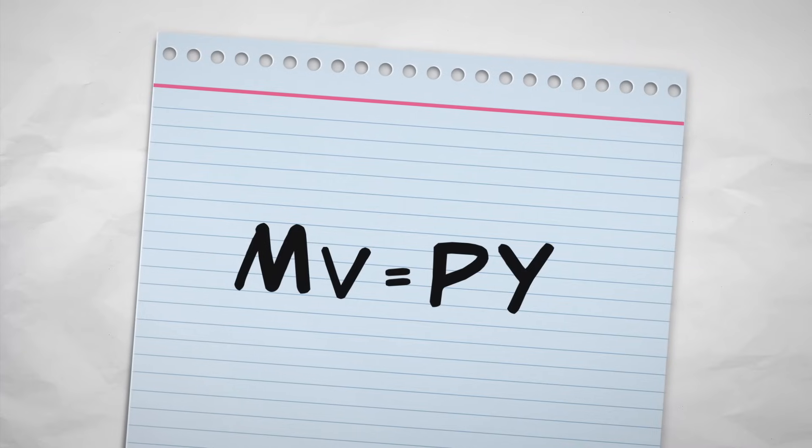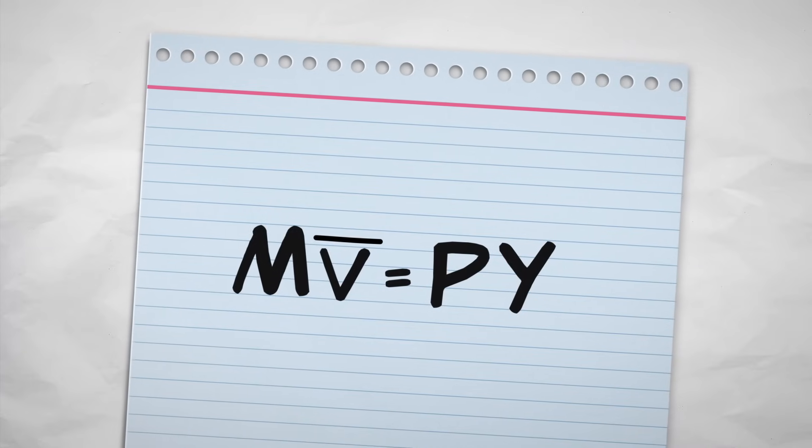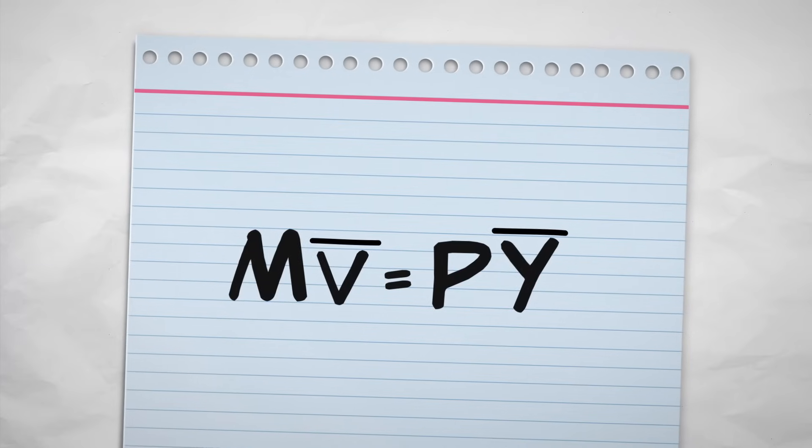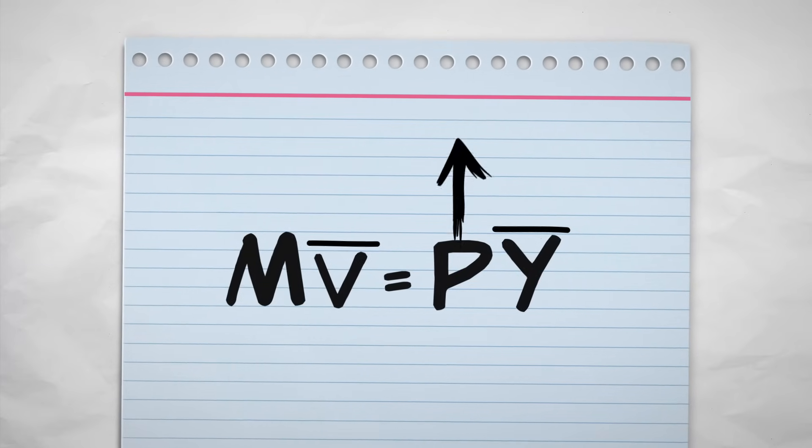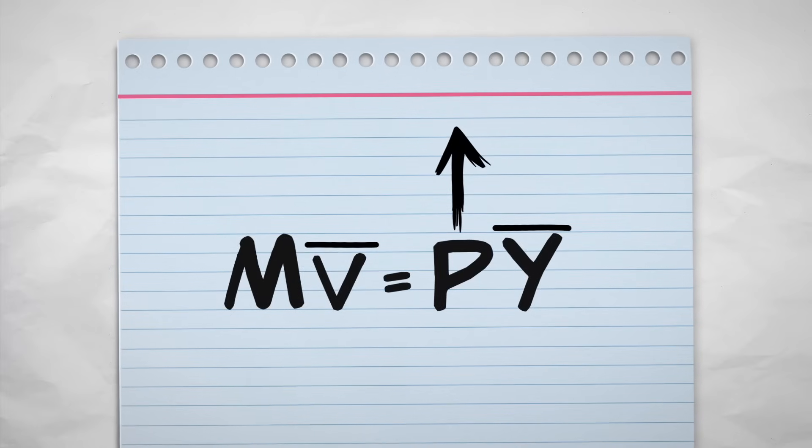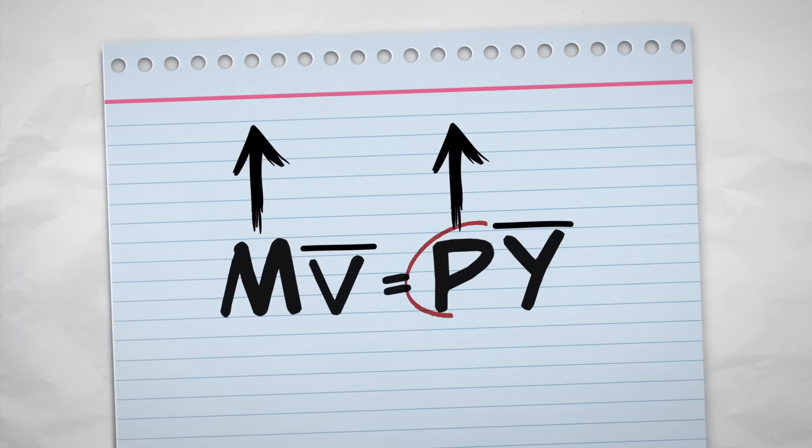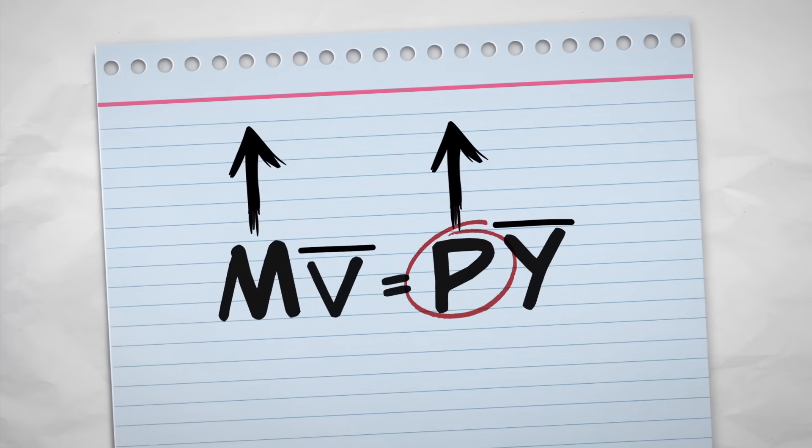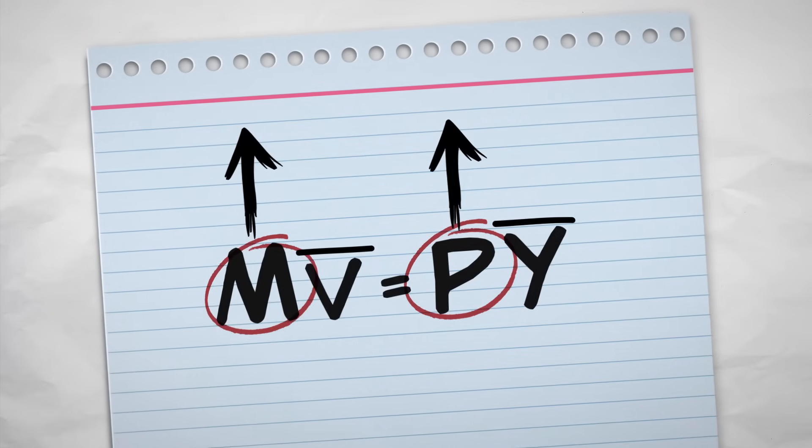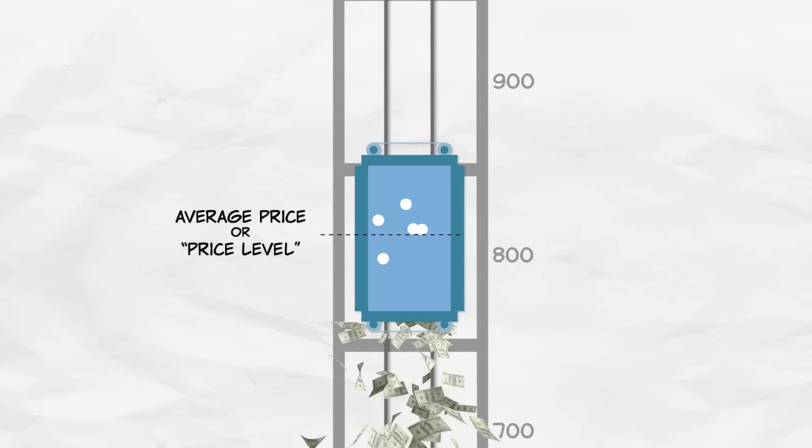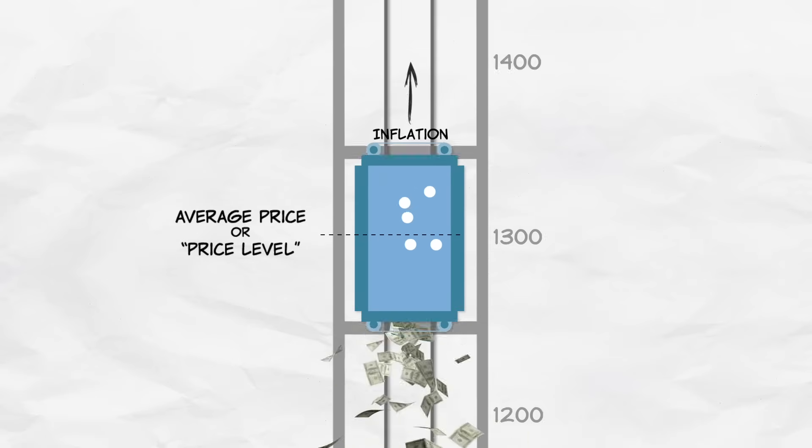So if y and v are relatively stable, which we'll note by adding a bar over top, then it follows immediately that the only thing that can cause an increase in p is an increase in m. In other words, increases in prices are caused by increases in the money supply. It's changes in the money supply that are driving the speed and the height of our inflation elevator.